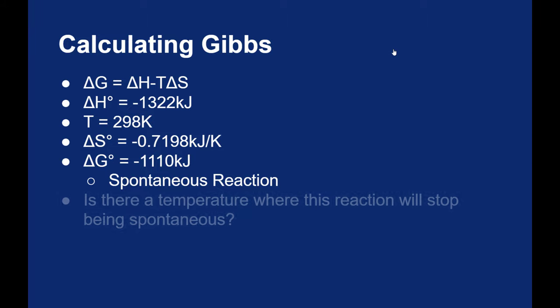My last question: Is there a temperature where this reaction stops being spontaneous? Now if you remember from our last video, if I have a negative delta H and a negative delta S, well those are mixed messages. Exothermic reactions are good for spontaneity, but reactions that decrease in entropy are bad. So that means there's going to be some temperature where this will stop being spontaneous.